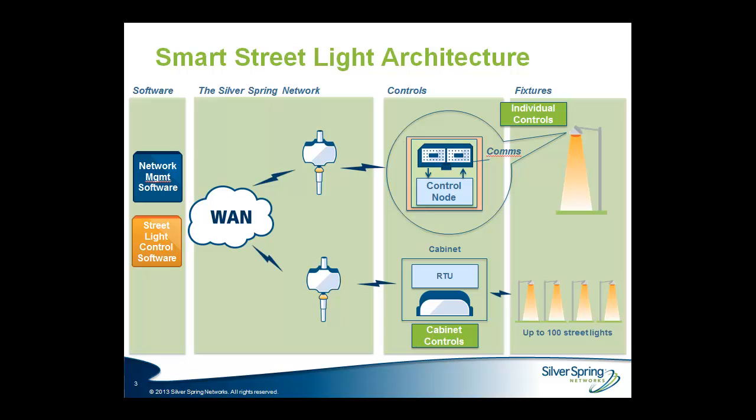This connectivity is provided through one of two different ways. The top right picture shows Silver Spring's communications module integrated directly into a lighting fixture. The bottom right picture shows a bank of streetlights controlled using a central cabinet. The controls for both solutions, whether an individual streetlight or a bank, are done through a control node or RTU, which allows connectivity to the back-office via Silver Spring's network of access points, relays, and other equipment.